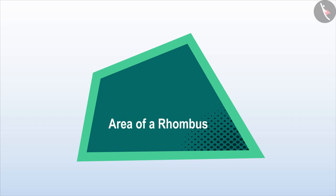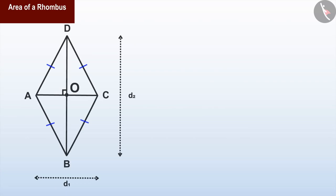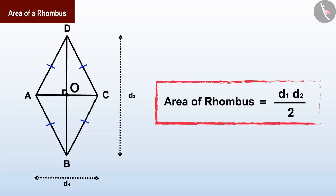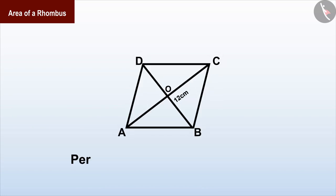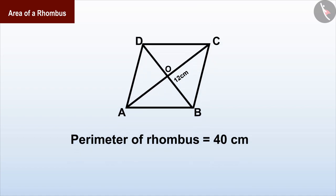Welcome all of you to this video. By now we have come to know about the area of rhombus. Today we will see an example based on the area of rhombus. The perimeter of rhombus ABCD is 40 centimeters.